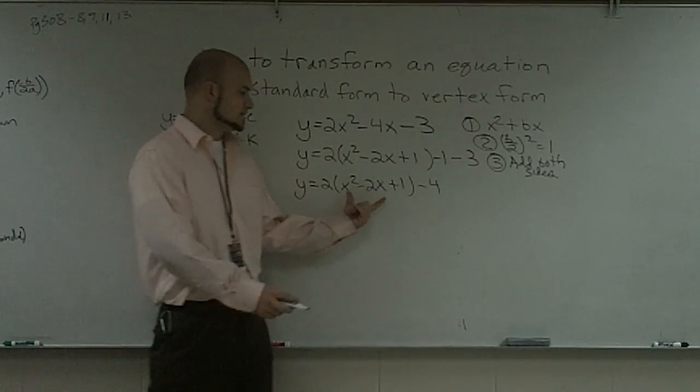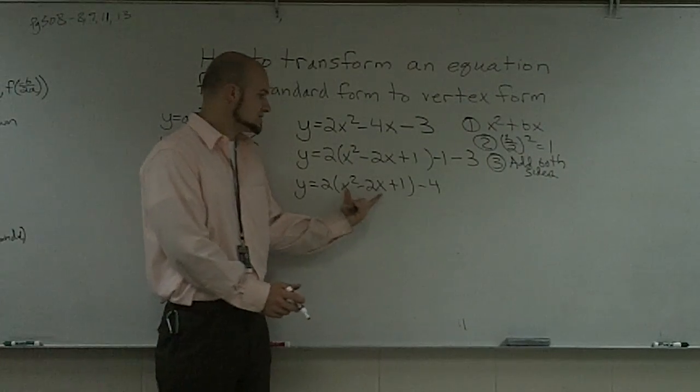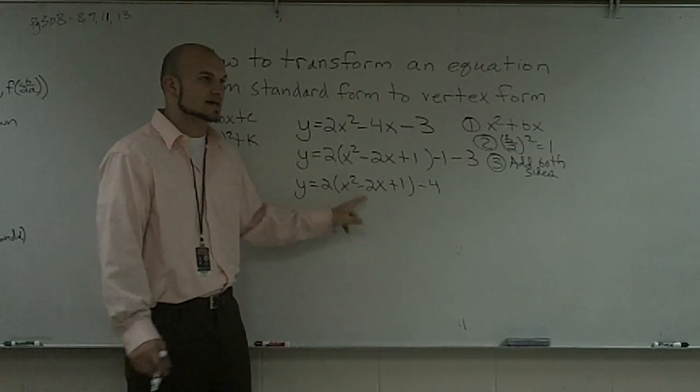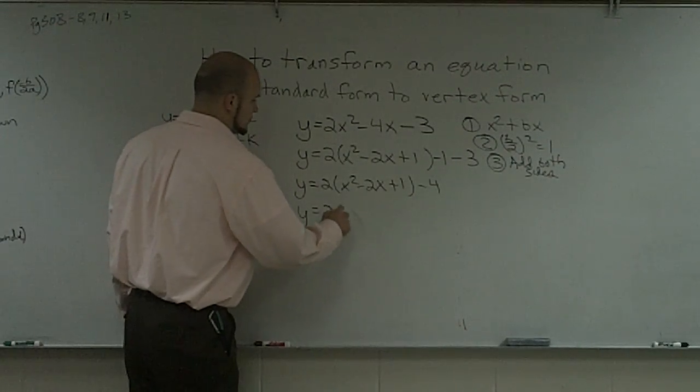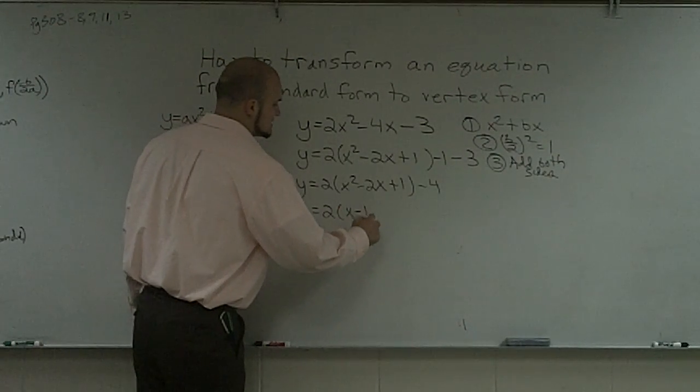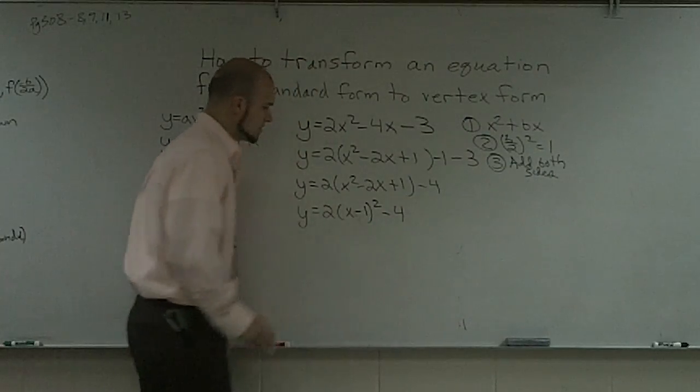Now if you look inside this parentheses, now what I can do is I can transform this into a perfect square. I can say this is the same thing as (x minus 1) squared. So I have y equals 2 times (x minus 1) squared minus 4.